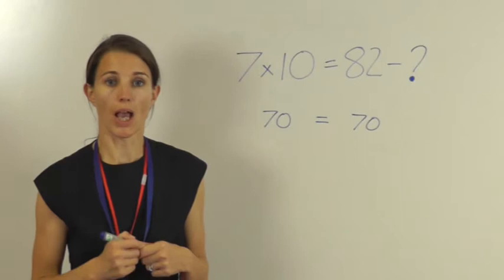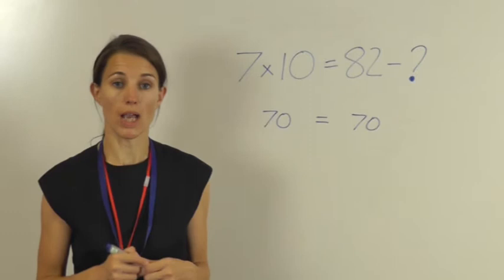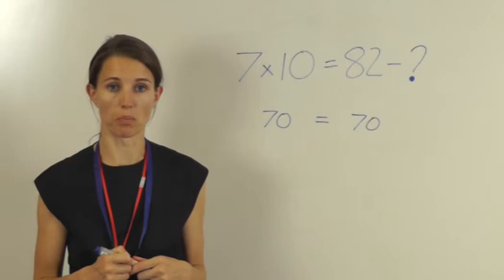So now I need to work out what my missing number is. 82 take away what would give me an answer of 70? Well, 82 take away 12 equals 70, so that means that my missing number is 12.